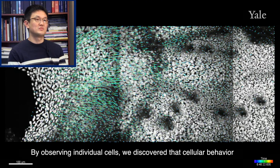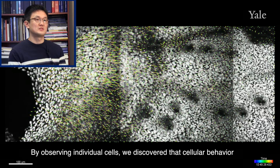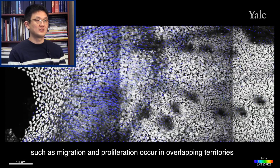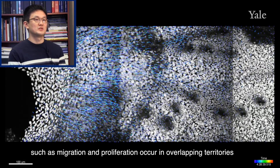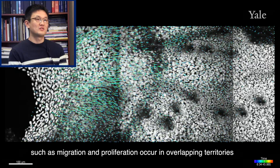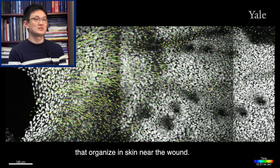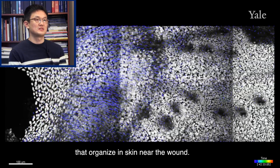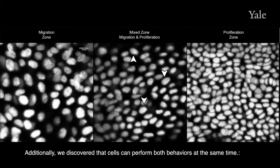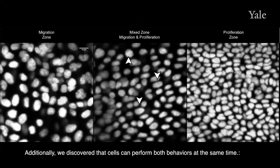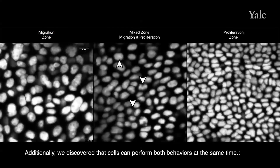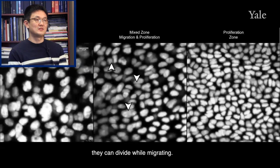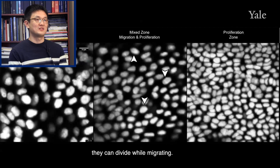By resolving individual cells, we discovered that cellular behaviors such as migration and proliferation occur in overlapping territories that are organized in the skin near the wound. Additionally, we discovered that a cell can perform both behaviors at the same time — they can divide while migrating.